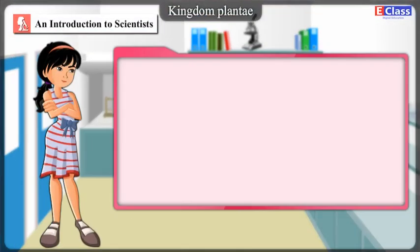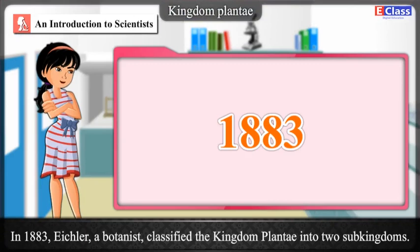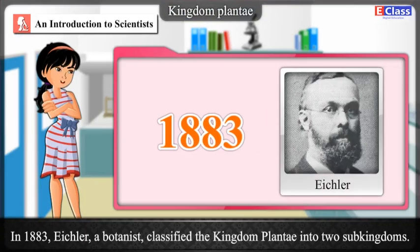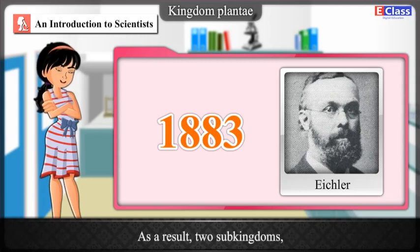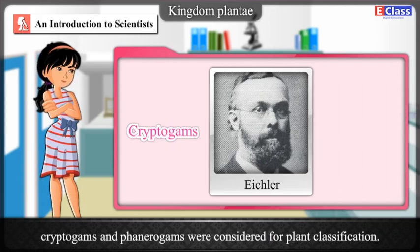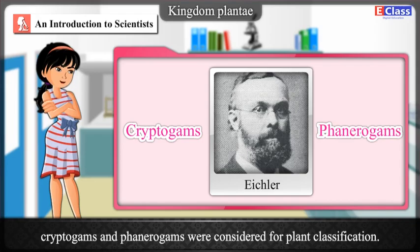An introduction to scientists: In 1883, Eichler, a botanist, classified the Kingdom Plantae into two sub-kingdoms. As a result, two sub-kingdoms — cryptogams and phanerogams — were considered for plant classification.